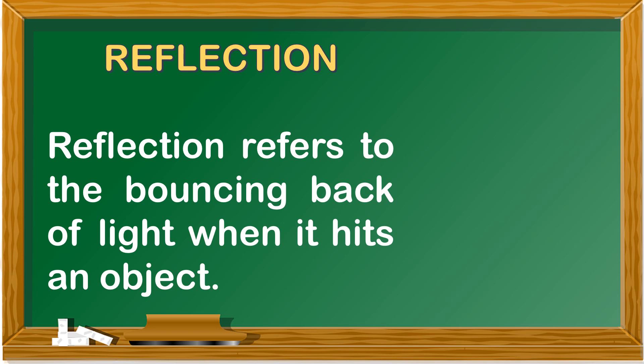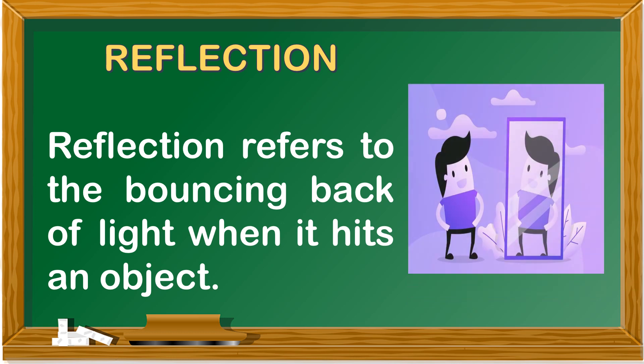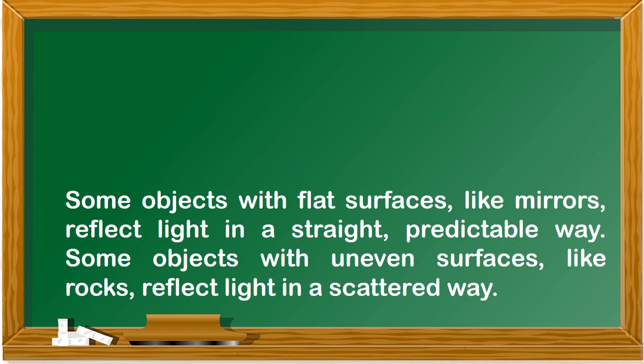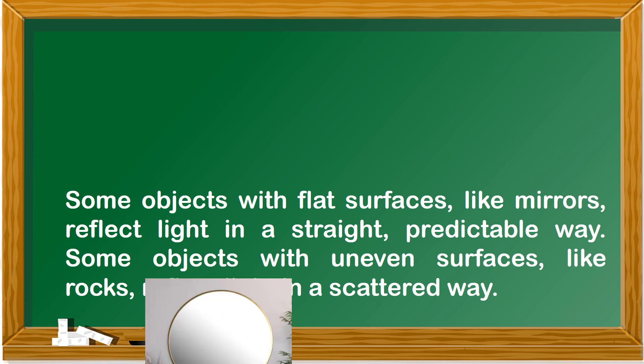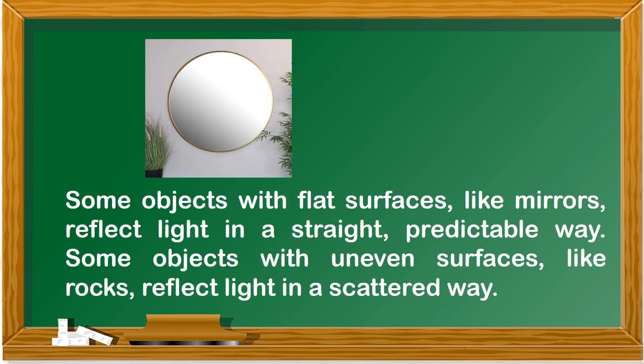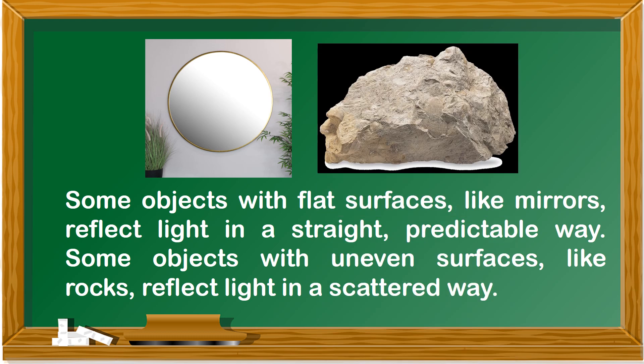Reflection refers to the bouncing back of light when it hits an object. Some objects with flat surfaces, like mirrors, reflect light in a straight, predictable way. Some objects with uneven surfaces, like rocks, reflect light in a scattered way.